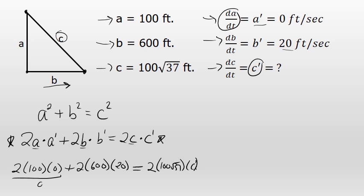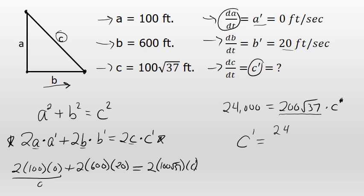2 times 100 times 0 is 0. 2 times 600 times 20 is 24,000. 2 times 100√37 is 200√37. To keep the answer as accurate as possible, I'll leave this in radical form as long as possible. To find C prime, I divide both sides by 200√37. So C prime equals 24,000 divided by 200√37. Approximating and rounding to the nearest hundredth, the rate of change of side C is 19.73 feet per second.